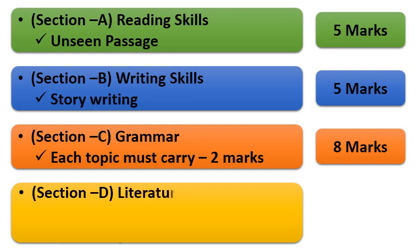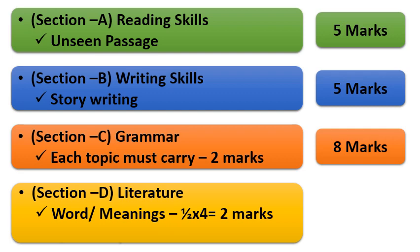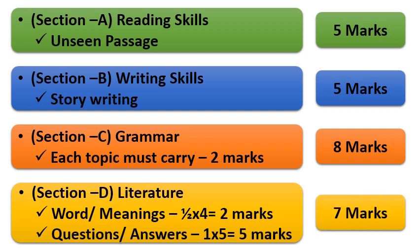Number 4, Section D, that is literature. In this, Honeydew and It So Happened, both books are there. It is divided into two parts. One is word meanings. It carries two marks. Next is questions and answers. It carries five marks. So total literature is of seven marks. So total unit test is of 25 marks. This is the blueprint of your unit test 1.